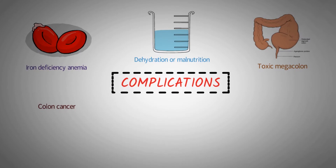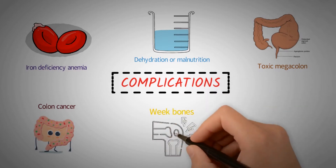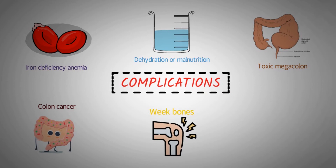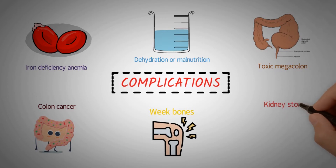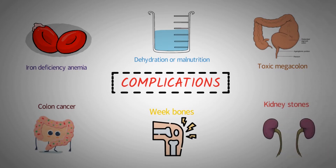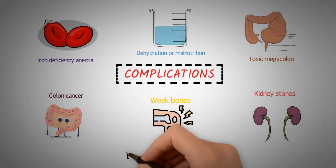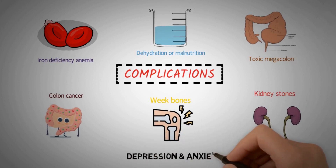Crohn's disease can raise your risk of colon cancer. Crohn's disease can also cause bone loss and osteoporosis, and medicines to treat ulcerative colitis may also lead to bone loss. IBD can cause inflammation inside the body, including liver problems, gallstones, and pancreatitis. Kidney stones are small, painful stones sometimes formed from oxalate, a type of salt, and are more common in people with Crohn's disease. Some of these health problems improve when IBD is treated, while others must be treated separately. People with IBD are also more likely to have depression and anxiety, especially during flare-ups.